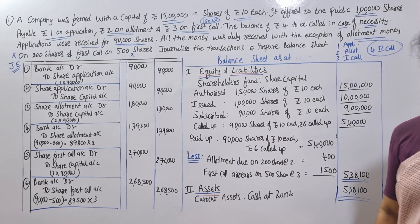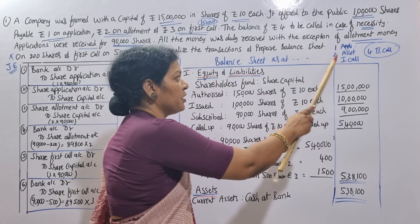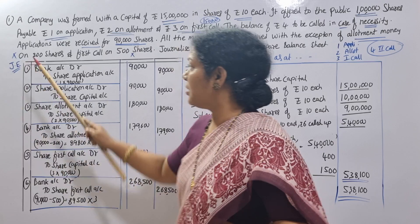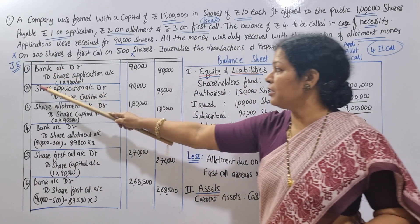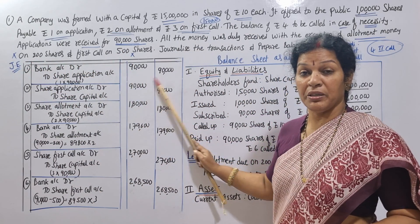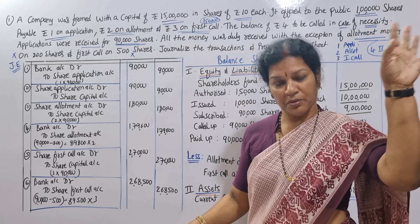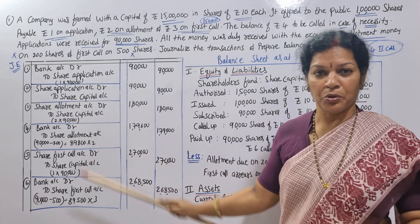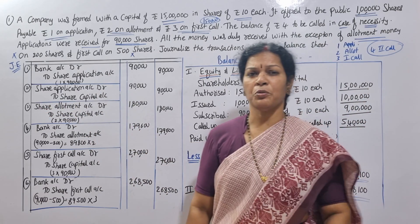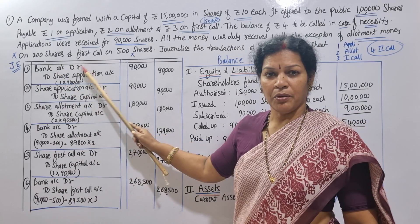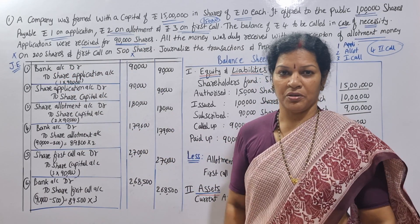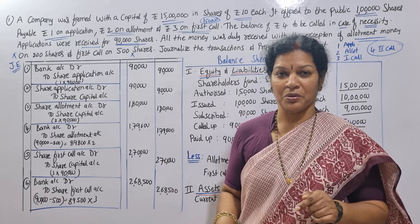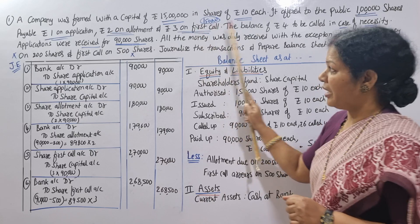For the journal entries, there are three main entries: application, allotment, and first call. The journal has columns for date, particulars, LF, debit, and credit. The first entry is: Bank Account Dr. to Share Application Account — for the application money received.